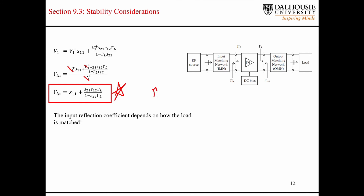Plugging this back into the input reflection coefficient expression, some terms cancel, and we end up with the final expression for the input reflection coefficient. This shows us that the input reflection coefficient is a function of the load reflection coefficient. To calculate the S11 parameter, you need to match the output side. If it's perfectly matched to 50 ohms, the load reflection coefficient is zero, this extra term goes to zero, and the input reflection coefficient equals S11 — that's where that relationship comes from.